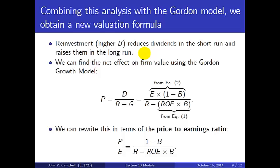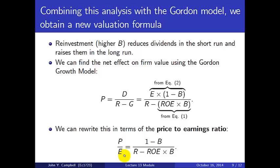Reinvestment reduces dividends in the short run but raises them in the long run. What is the net effect on firm value? Using the Gordon growth model: P equals D over (R minus G). D is earnings times (1 minus B), and the denominator is R minus ROE times B — that's what growth is. So B enters on both the top and the bottom, and it's a fight between those two effects. Dividing by E, we get the price-earnings ratio: P over E equals (1 minus B) divided by (R minus ROE times B).